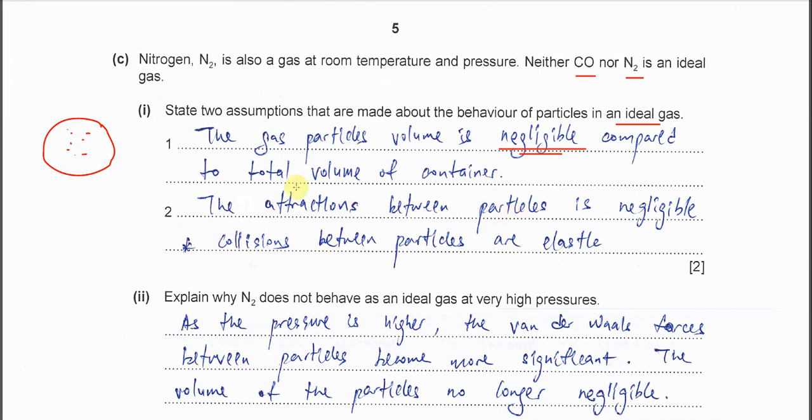Another one is we assume the attraction between particles is also negligible. There is no attraction between the particles. All the particles in the container will not really interact with each other. No bonding is formed between them. Another assumption is collision between the particles are elastic, or you can say collision between the particles and the walls are elastic. These are the 3 most significant assumptions you must remember.